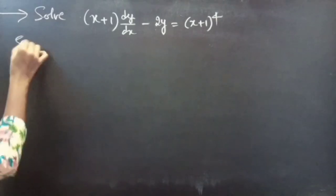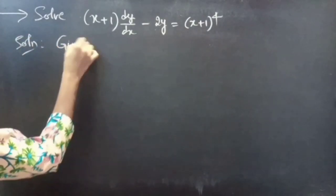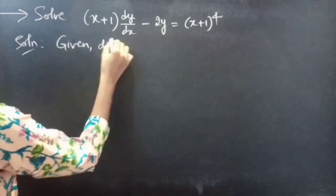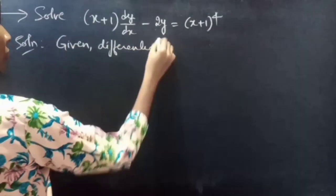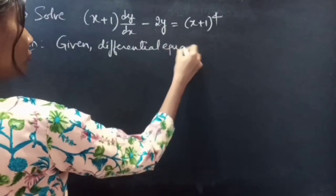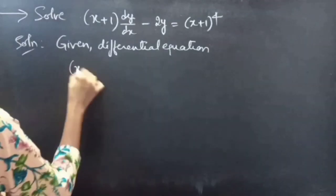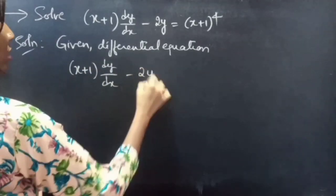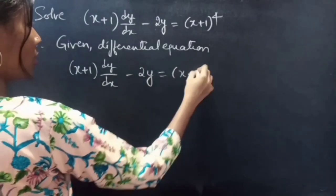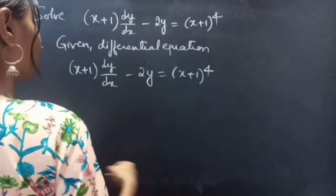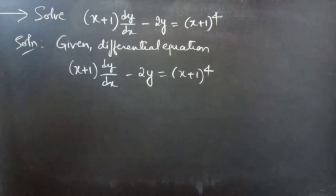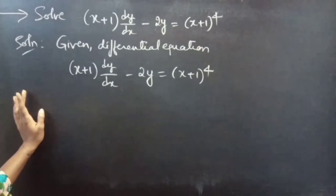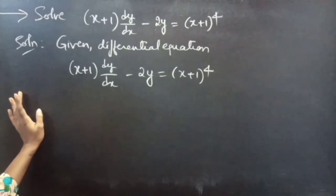Solution. Given differential equation: (x+1) dy/dx minus 2y equals (x+1)^4. Now, we need to make this differential equation into the standard form of a linear equation.